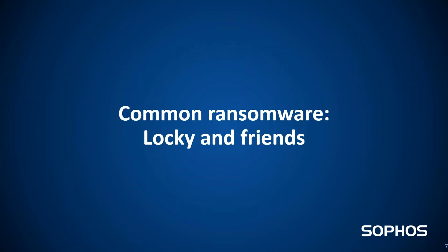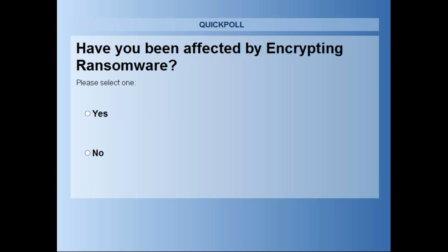Let's move ahead and understand the common ransomware — Locky and friends. In a common Locky attack, you receive an email which may contain a document. The document will look completely scrambled, something that you would not be able to read. It then advises you to enable the macro, because the data cannot be read.